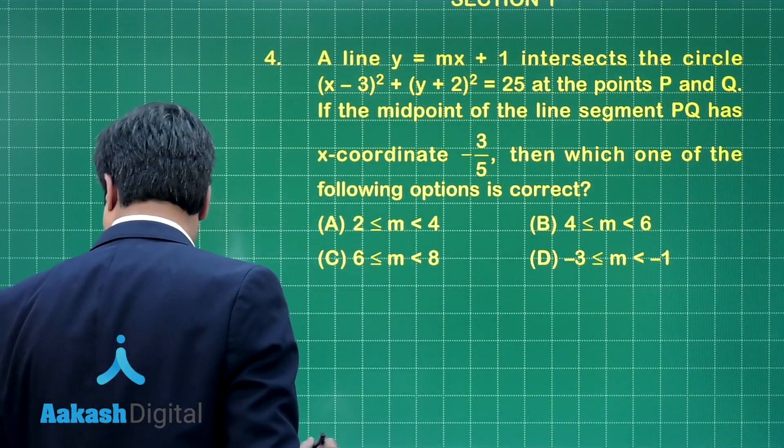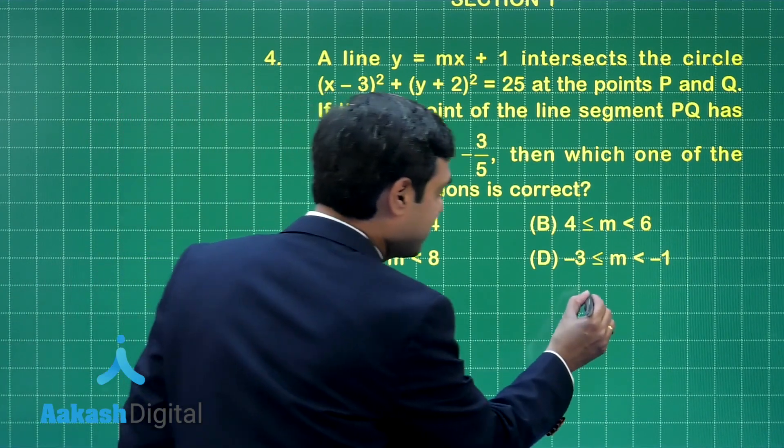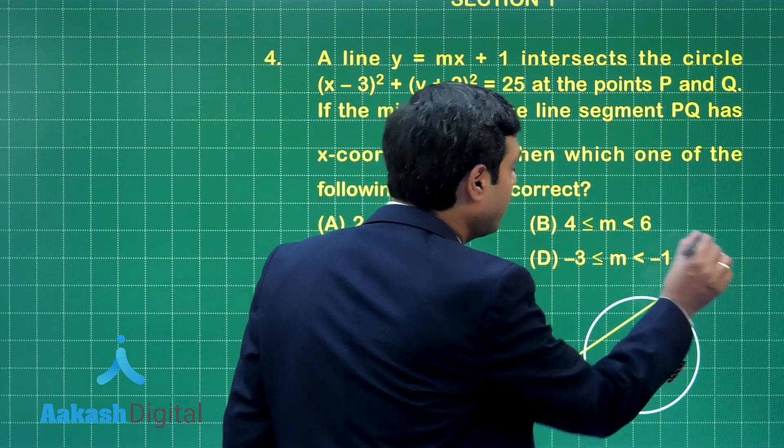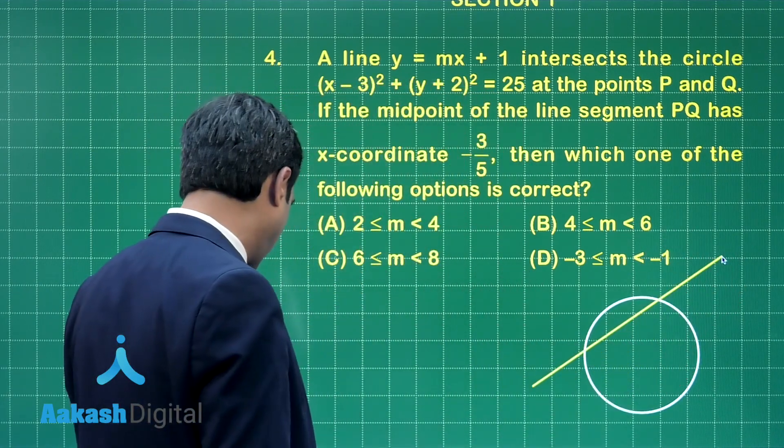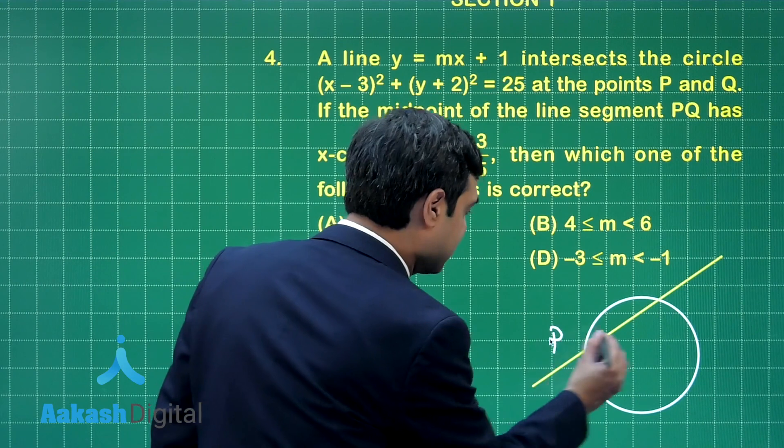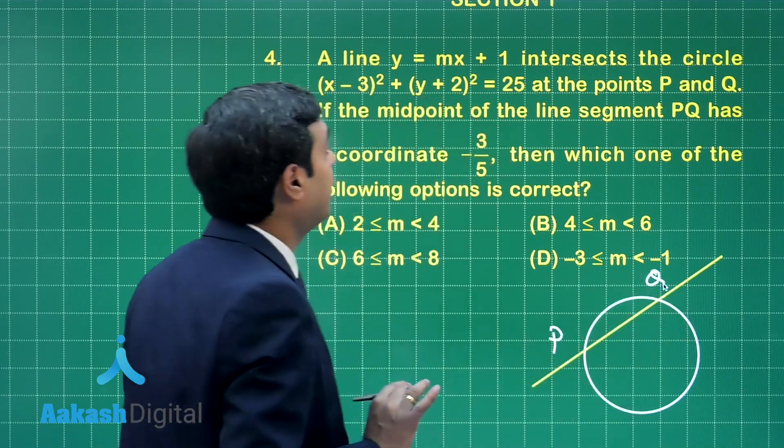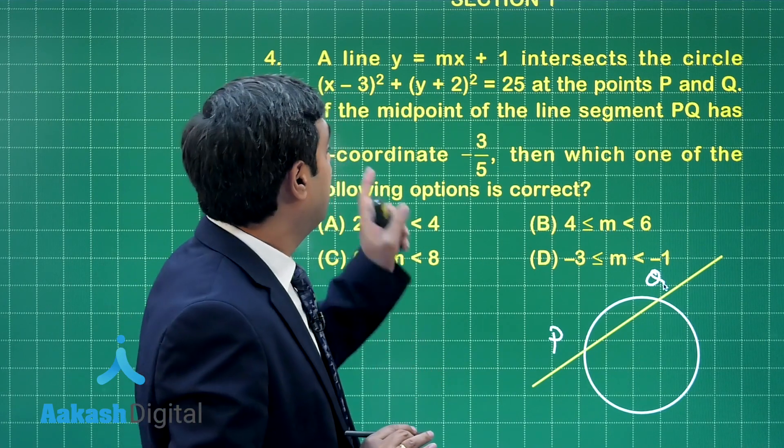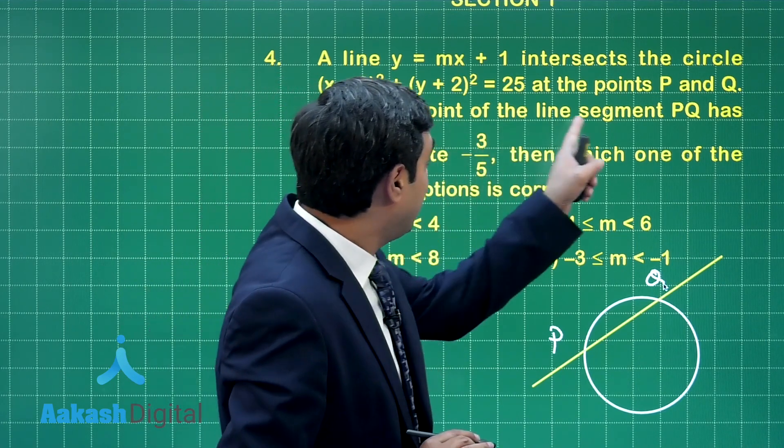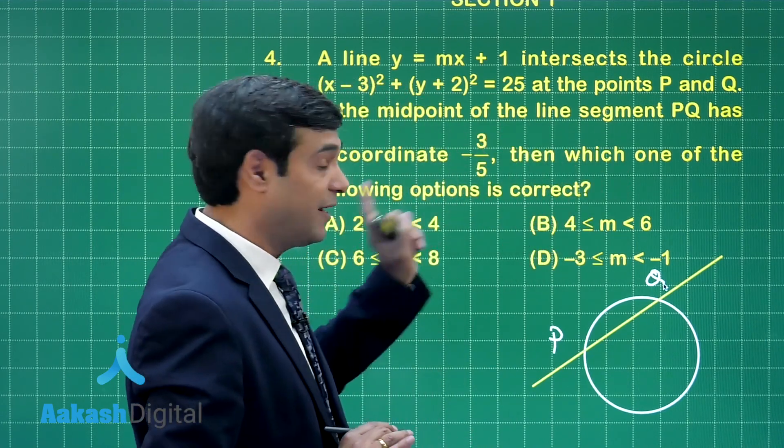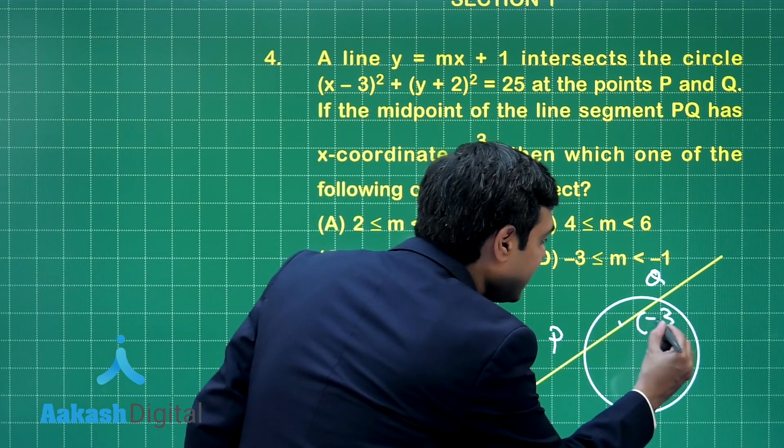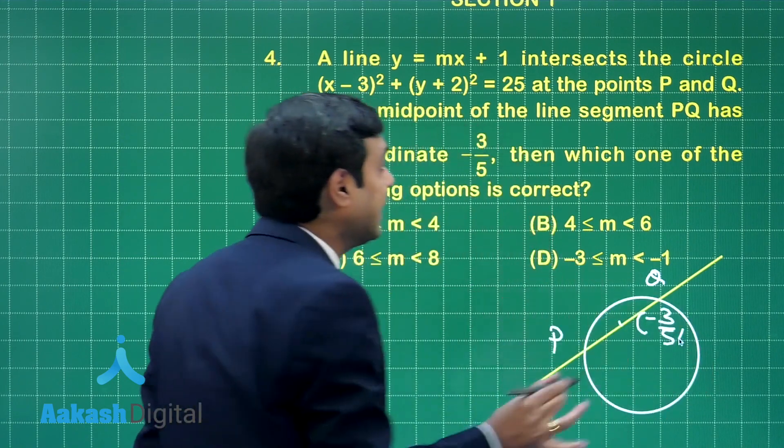Let us plan this question. Here it is given that the circle is here, let us draw a circle like this correct. Next it is given that a line PQ is intersecting it at two points say P and Q like this correct.